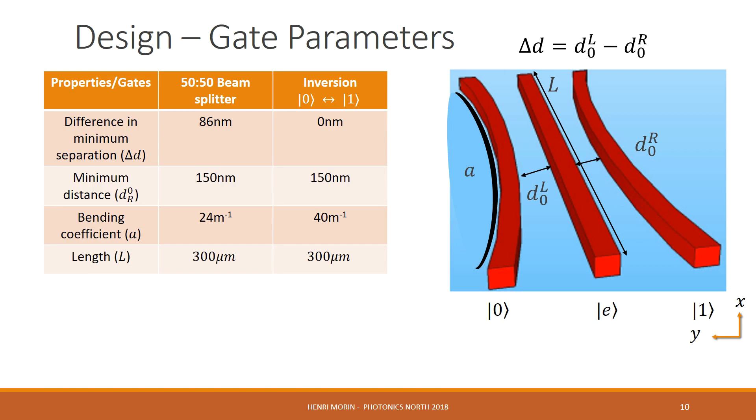Now, I'll go over specific parameter numbers. The two gates that we are trying to design are a 50-50 beam splitter and an inverter. We can see that the difference in minimum separation, delta d, for the 50-50 beam splitter is 86 nanometers, and for the inverter it's 0. We have the same minimum distance between the zero and the one waveguide, but because of the difference in delta d, we will have different minimum distance between the zero waveguide and the excited waveguide.